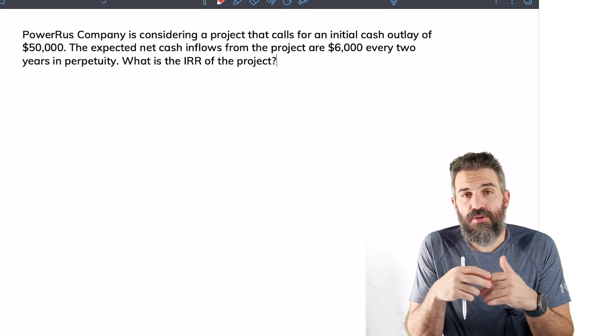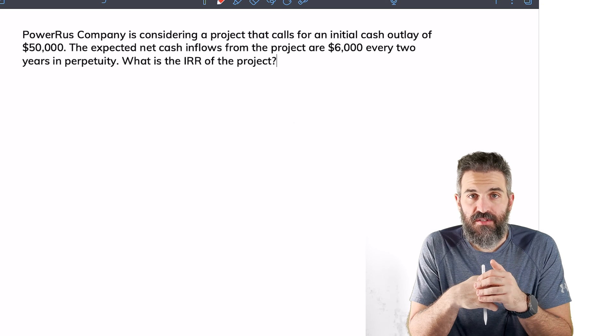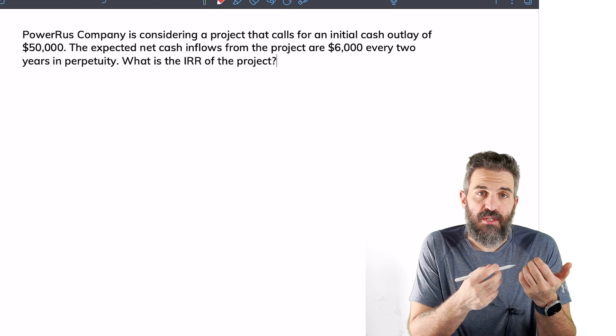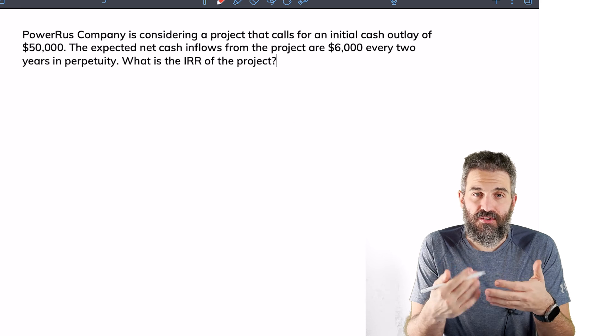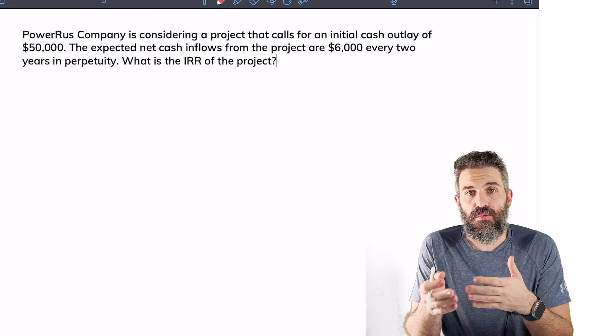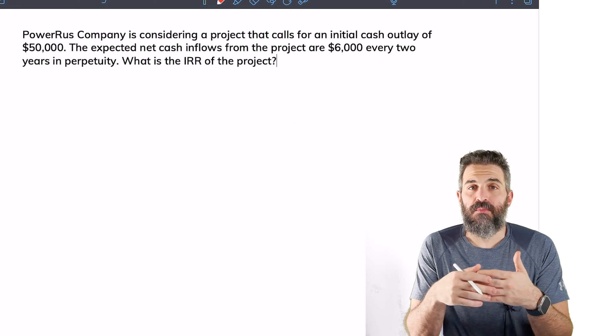Finding the internal rate of return for a project that has perpetual payments. In this question, you've been told that the payment is $6,000 every two years and that the project will cost you $50,000 upfront.